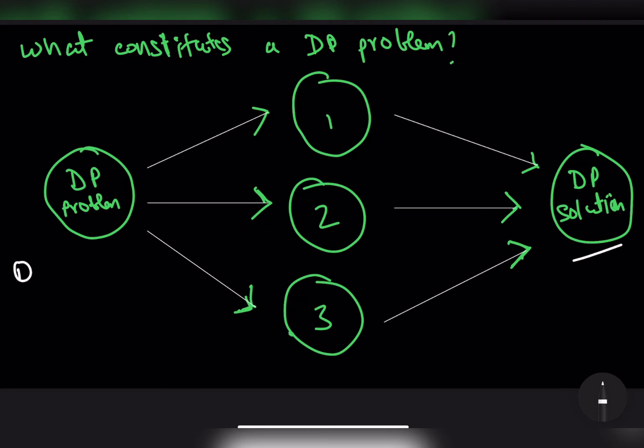So sub-problem one is state definition. The sub-problem two is laying down the recurrence relation. And the sub-problem three is finding the correct order to solve the states in DP.